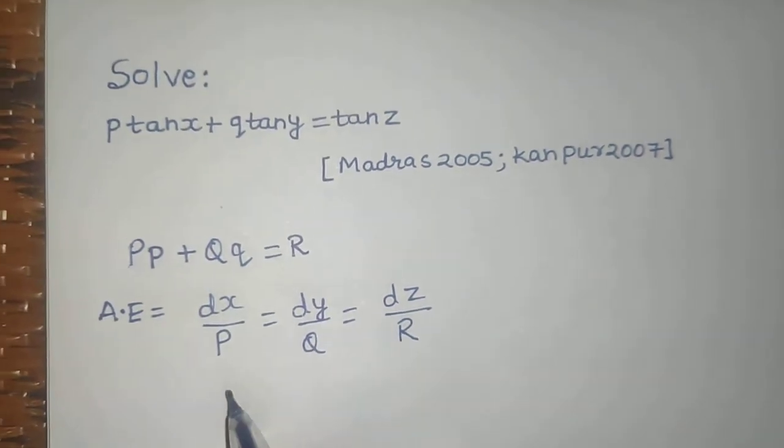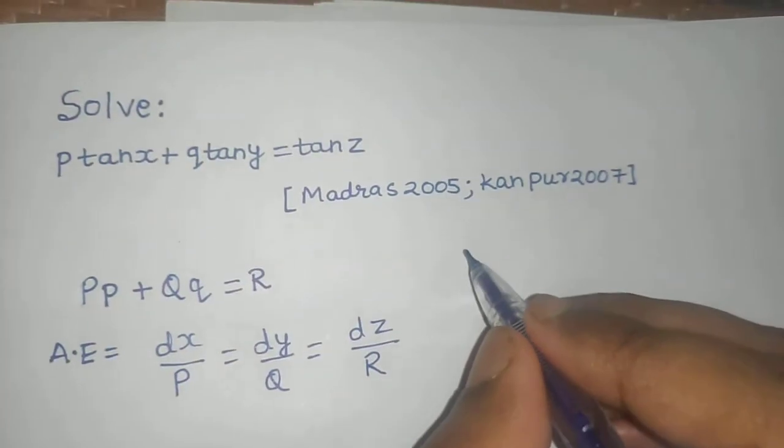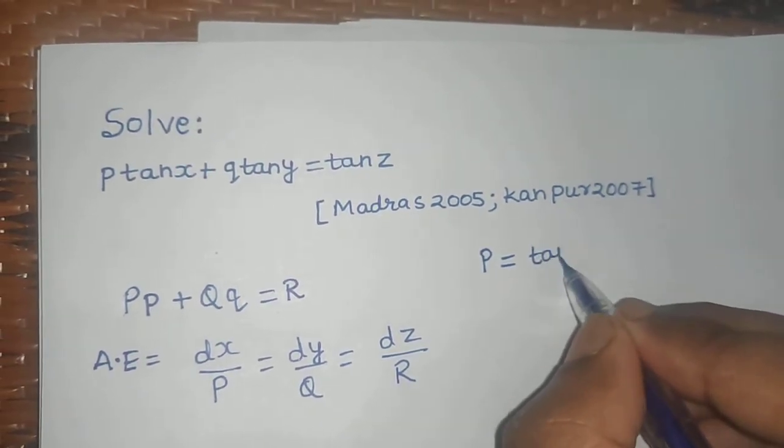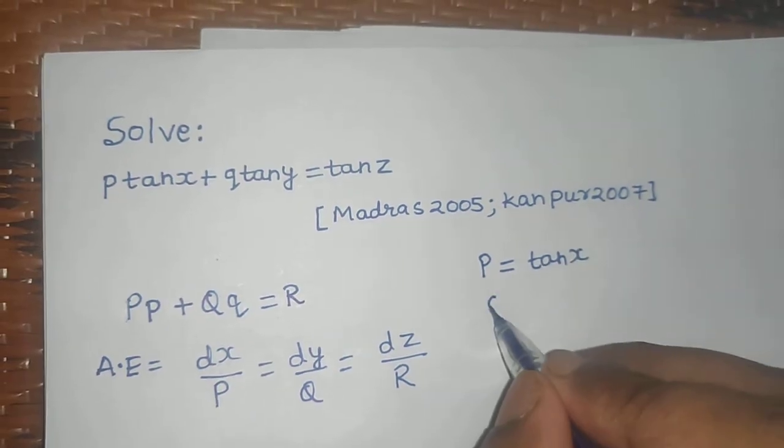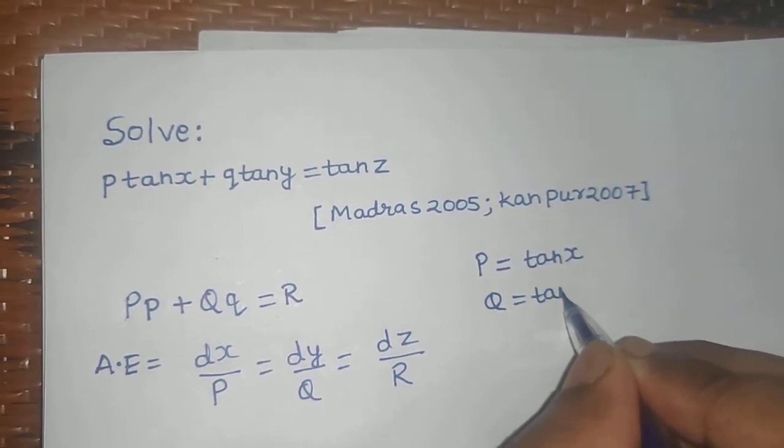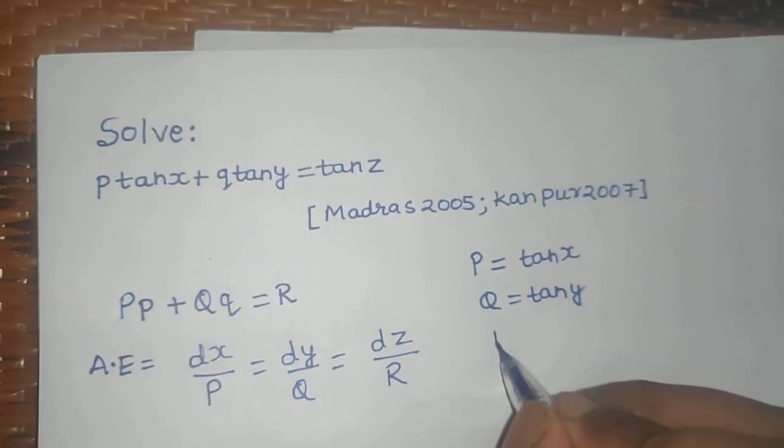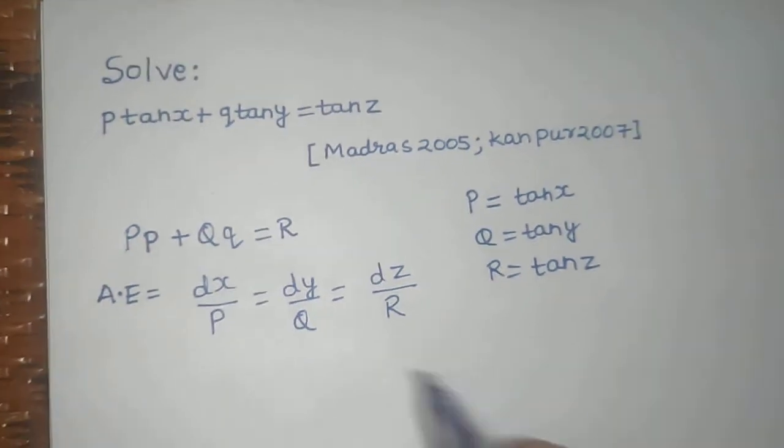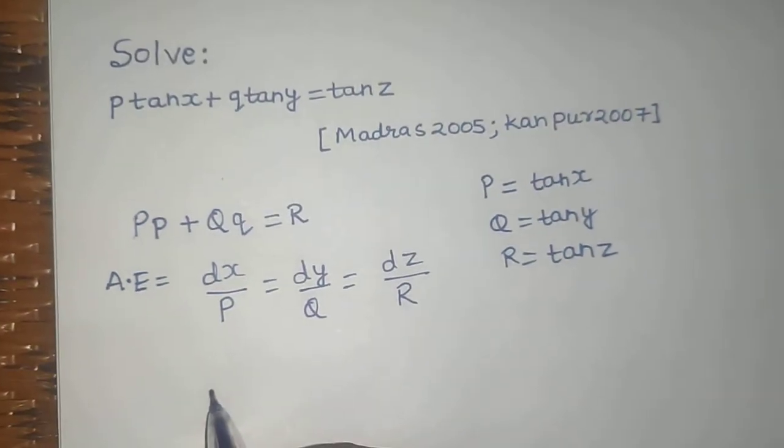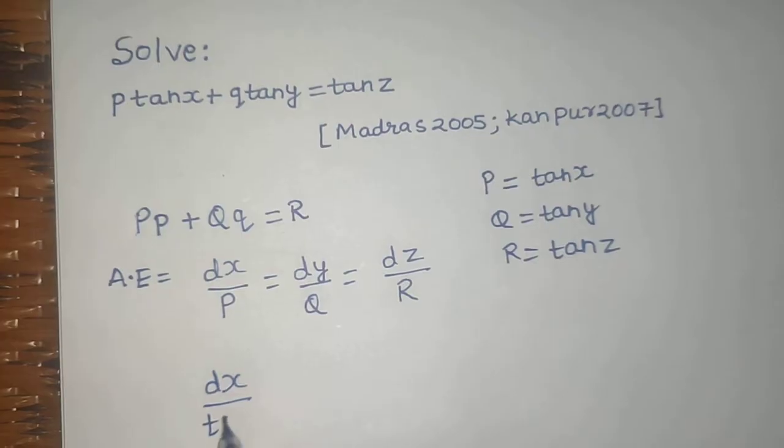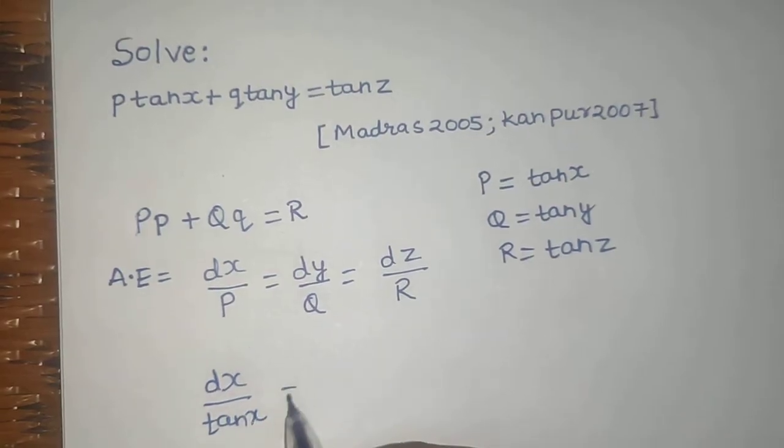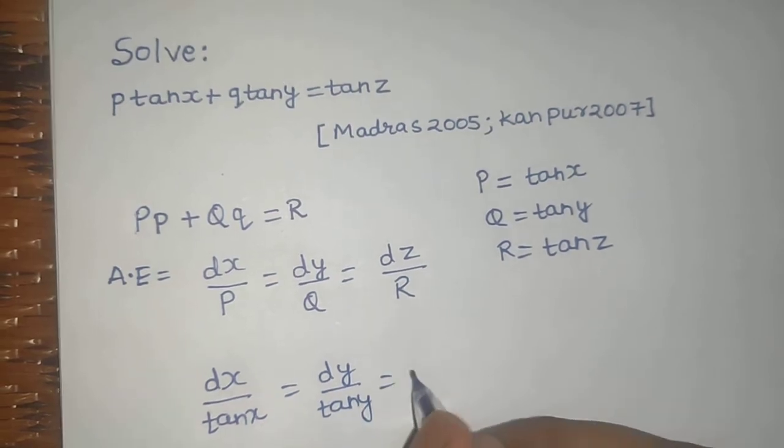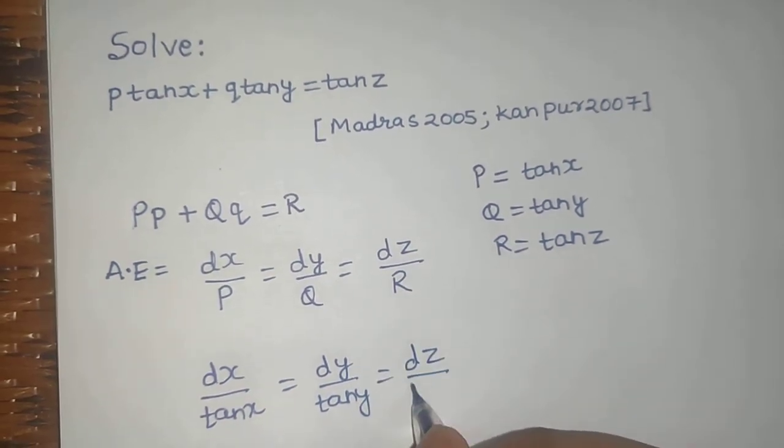In this question, capital P, which is the coefficient of small p, is tan x. Capital Q is tan y, and R, which is on the right-hand side, is tan z. So the auxiliary equation will be dx by tan x equals to dy by tan y equals to dz by tan z.